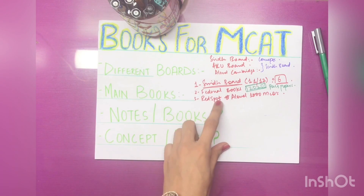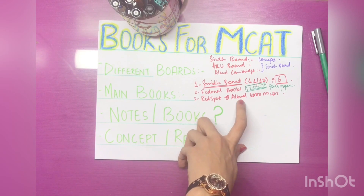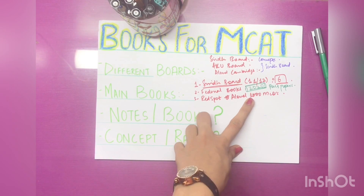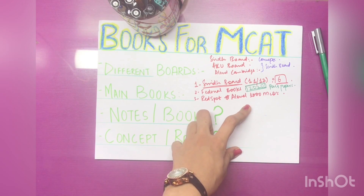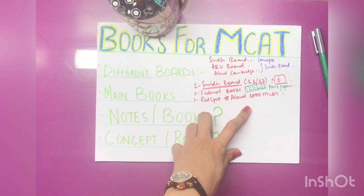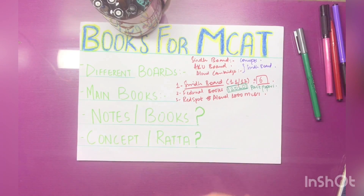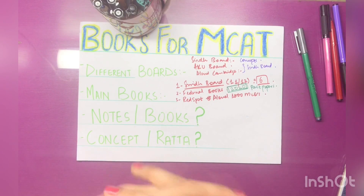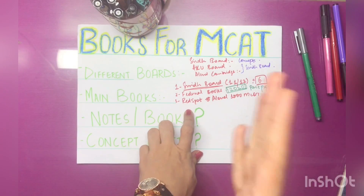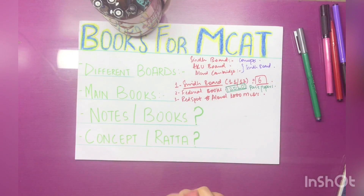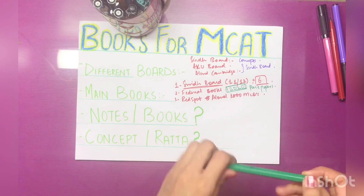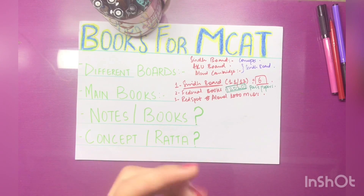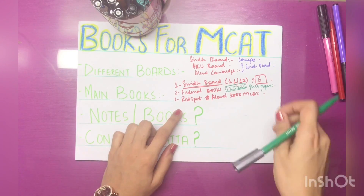The next book to recommend is Red Spot — also called A-levels 1000 MCQs. It covers Biology, Chemistry, and Physics. You have to solve these three books. In 2016, when I applied to different universities, many of the 200-question practice papers had questions from Red Spot. Even for DAO, Sindh Board, or Karachi tests, many questions come from Red Spot. Make sure your concepts are good and try to complete this — it is very important.